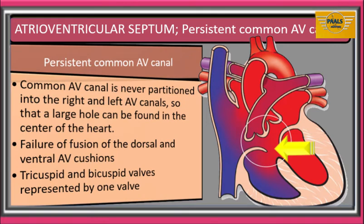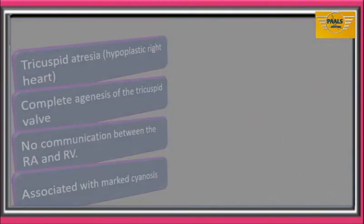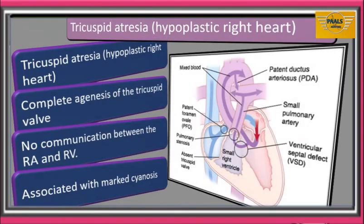As a result, the tricuspid and mitral valves are represented by one valve common to both sides of the heart. We will look at hypoplastic right heart or tricuspid atresia. This is a condition in which there is complete agenesis of the tricuspid valve, so that there is no communication between the right atrium and the right ventricle. The point where the valve is supposed to be is sealed.